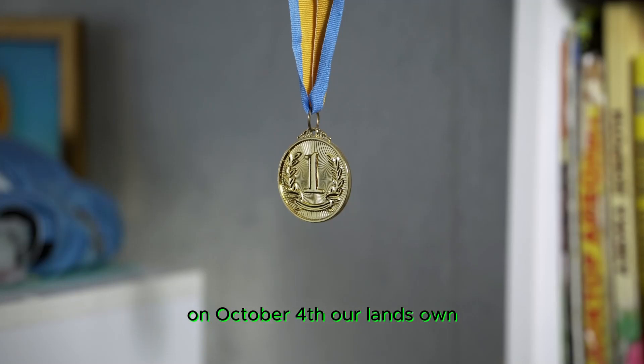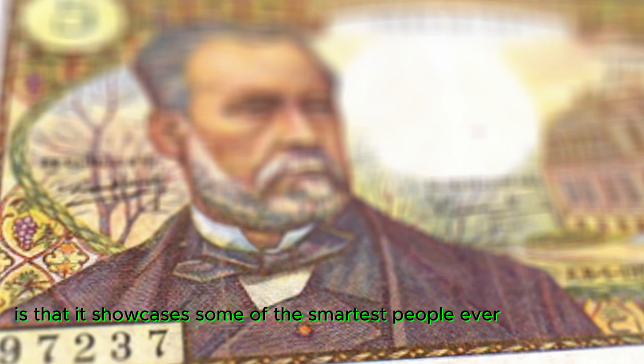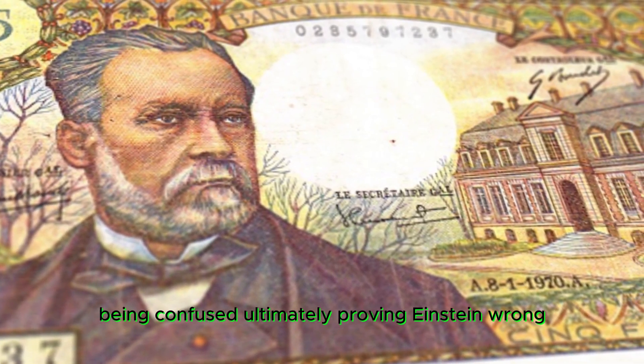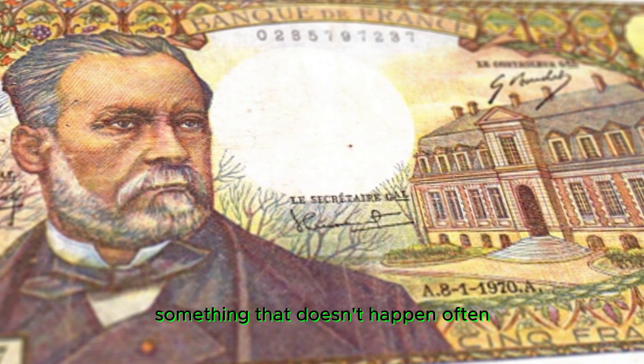On October 4, our land's own John Clauser and Anton Zielinger were awarded the Nobel Prize in Physics for proving that the universe isn't locally real. What I love about this story is that it showcases some of the smartest people ever being confused, ultimately proving Einstein wrong, something that doesn't happen often.